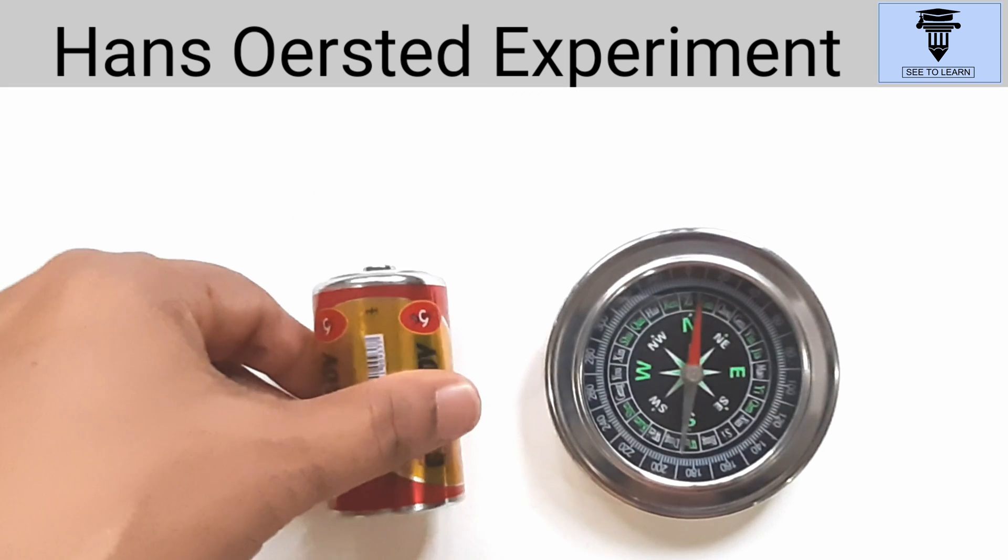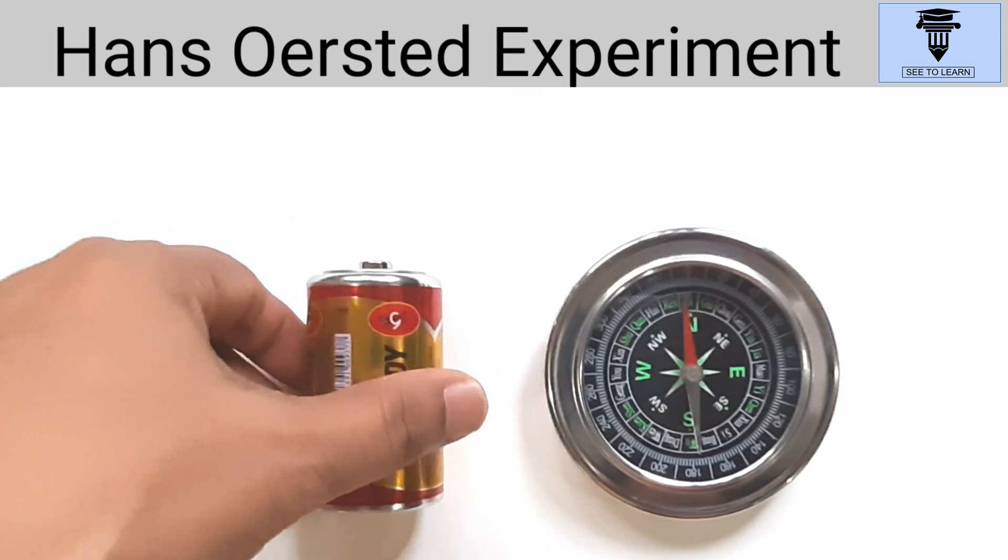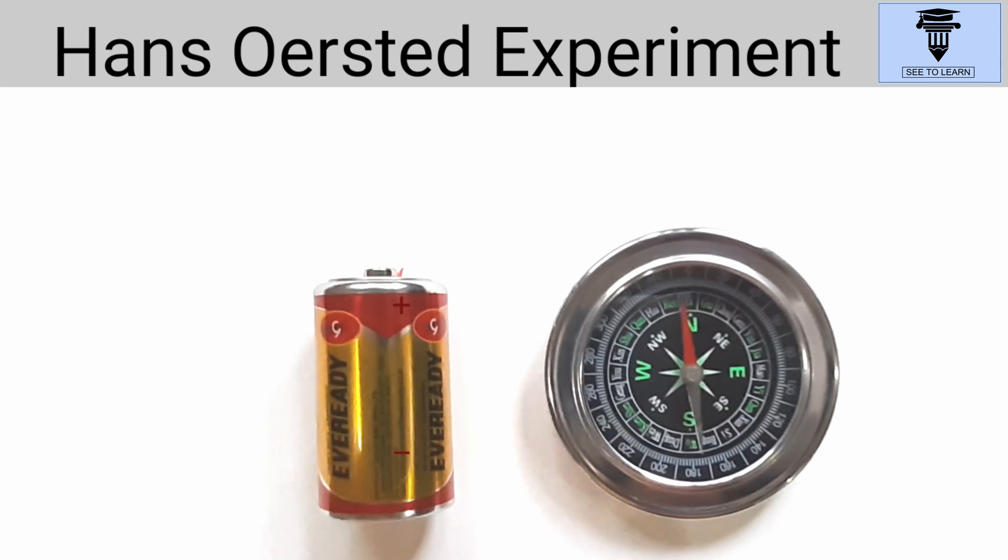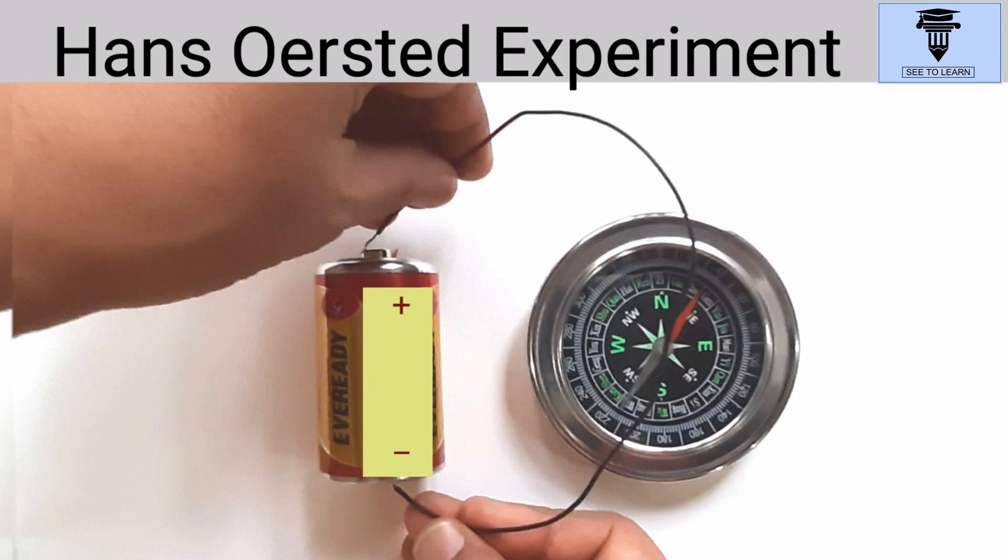Now I turn the cell to change its polarity. This changes the direction of the current through the conductor. See, the needle now deflects in the opposite direction - that is, towards the east.